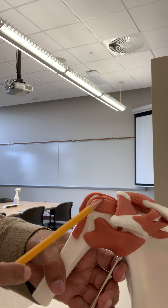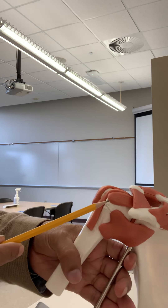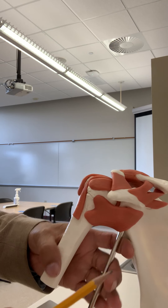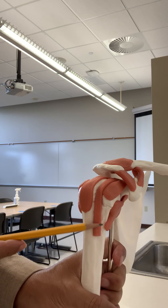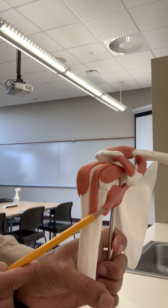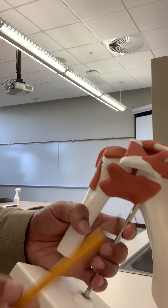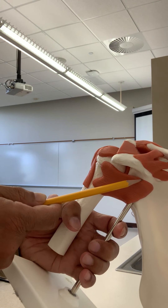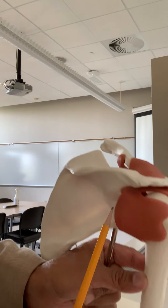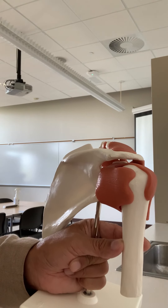This ligament connecting the coracoid and humerus is the coracohumeral ligament. This is the tendon of the long head of biceps brachii muscle. And this is the glenohumeral ligament — from the border of the glenoid cavity to the humerus. In the back you also have the glenohumeral ligament. Those are the ligaments around the shoulder joint.